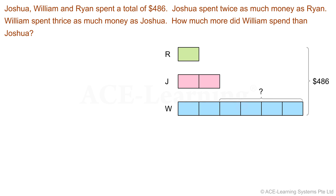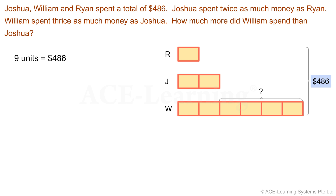Now let's study the model we have just drawn. Notice that all these units are equal. There are 9 equal units in total, and they are equal to $486. So we write: 9 units = $486. What is 1 unit? 1 unit = $486 ÷ 9, which gives us $54.